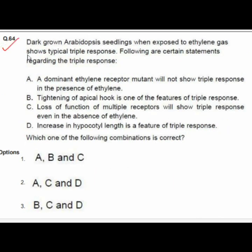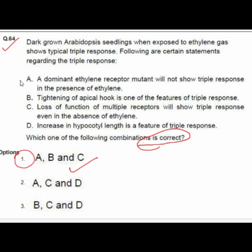Question 64: Dark-grown Arabidopsis seedlings exposed to ethylene gas show a typical triple response. Option 1 — A, B, C — is correct: A — a dominant ethylene receptor mutant will not show triple response in the presence of ethylene; B — tightening of the apical hook is one feature of triple response; C — loss of function of multiple receptors will show triple response even in the absence of ethylene.